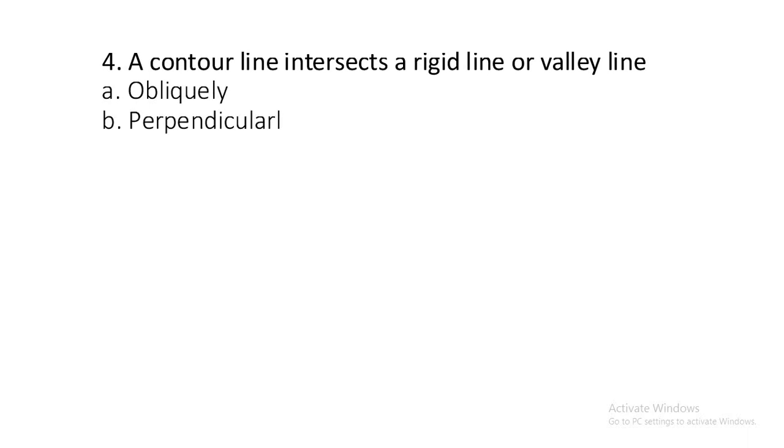Question number four: A contour line intersects a rigid line or valley line obliquely, perpendicularly, vertically, or at any angle? The correct answer is perpendicularly.